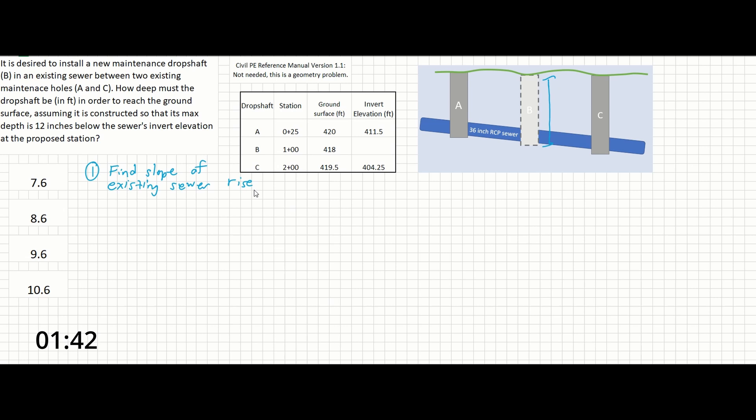So the first thing we can find is the delta Y between manholes A and C. And that's going to be given right here in our table. So the invert elevation of the manhole at A and C has been given to be 411.5 feet minus 404.25 feet. So the invert at C is 7.25 feet lower than the invert at A.